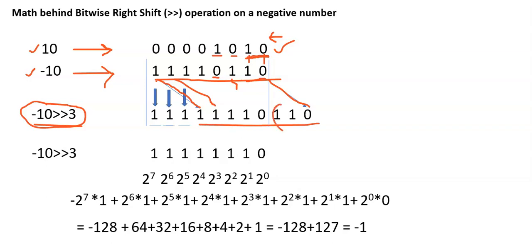Observe that the 3 rightmost bits are exceeding the register size, so they are truncated — that means they are omitted. The leftmost 3 empty places are filled with their previous values, which are all 1s, including the sign bit. That is why in the right shift operation the sign value is carried — if the original number is positive, the result is positive; if the original number is negative, the result is also negative.